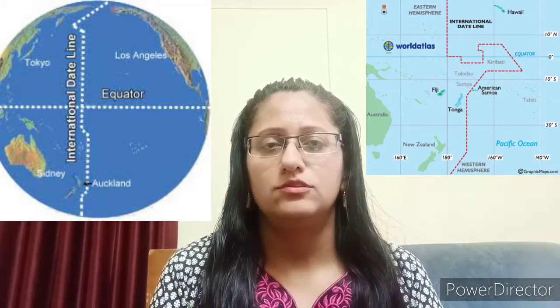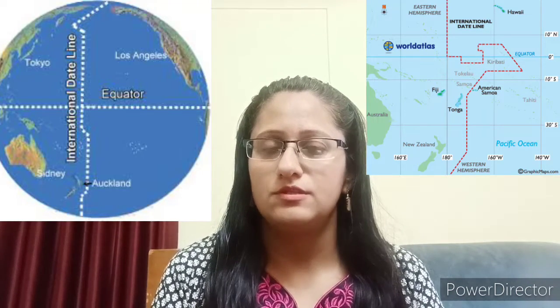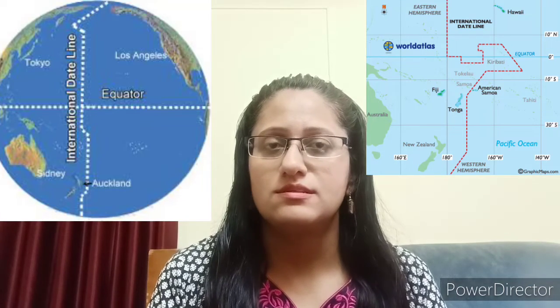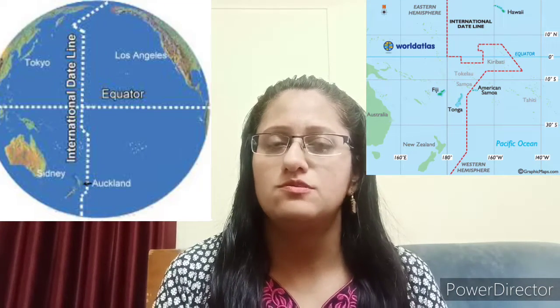Hello everyone, welcome back once again with a new topic. Today we'll be studying about the concept of the International Date Line. If you see a globe or a map, just opposite to the prime meridian, you will see there is one line drawn opposite the prime meridian in a zigzag manner. It is named as the International Date Line.